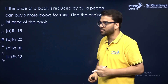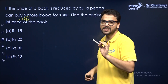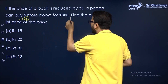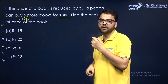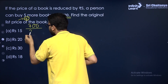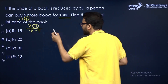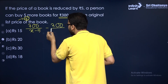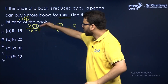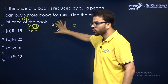Assume the original list price is rupees X. The student is spending rupees 300. Initially they could buy 300/X books. If the price is reduced by 5, the new price is (X − 5), so now they can buy 300/(X − 5) books — which is 5 more than before.